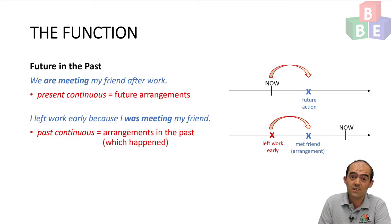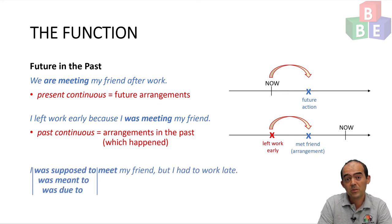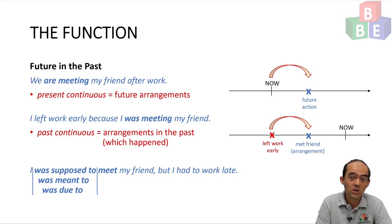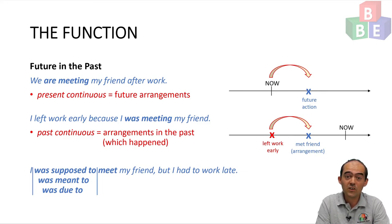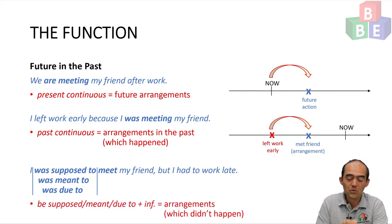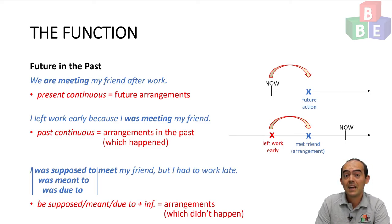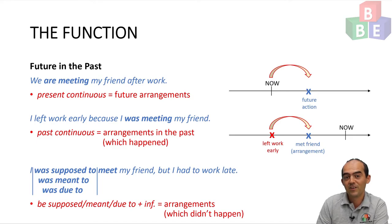But what about if the arrangement didn't happen? In that case I could say 'I was supposed to meet my friend,' or 'I was meant to meet my friend,' or 'I was due to meet my friend, but I had to work late' — meaning that the arrangement didn't happen. So be supposed to, be meant to, be due to, plus infinitive, are all used for arrangements which didn't happen. They are past forms of these general future expressions, which you can learn more about by checking out that video.